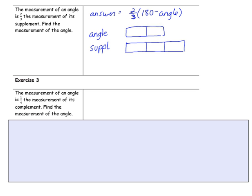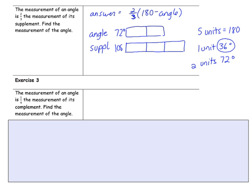These five units together have a sum of 180 degrees because there are 180 degrees in supplementary angles. Taking 180 and splitting it five ways evenly means one unit equals 36 degrees, and two units would be 72 degrees — so the angle itself is 72 degrees. The supplement would be three units of 36 degrees: three times 36 is 108 degrees. Those are the measurements of the two angles.